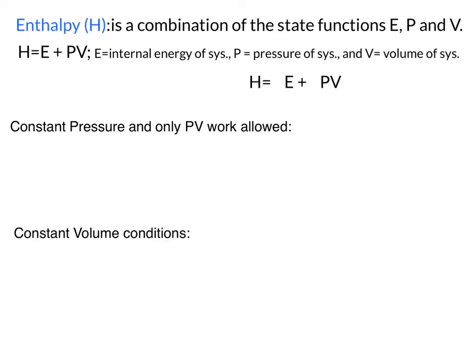Enthalpy, which is represented by the letter H, is a combination of the state functions energy, pressure, and volume. Enthalpy can be represented by this equation: enthalpy is equal to the internal energy plus the product of pressure and volume. If we want to look at the change in enthalpy, which we'll be observing and analyzing very frequently in chemistry, we utilize this equation here.